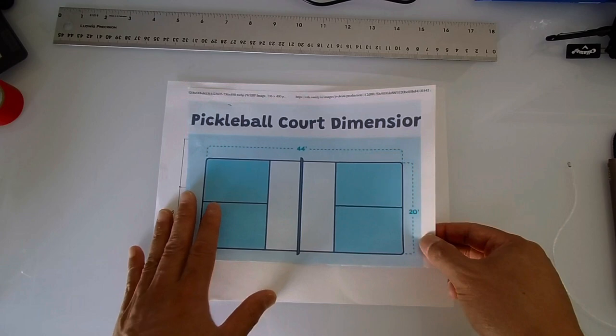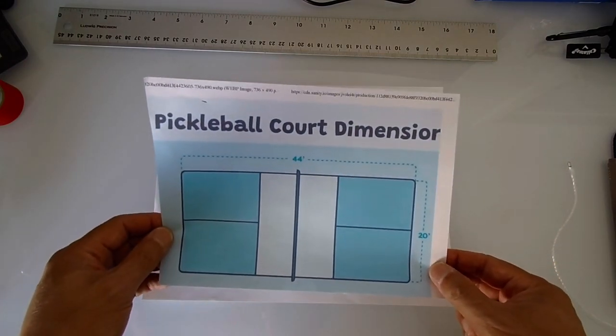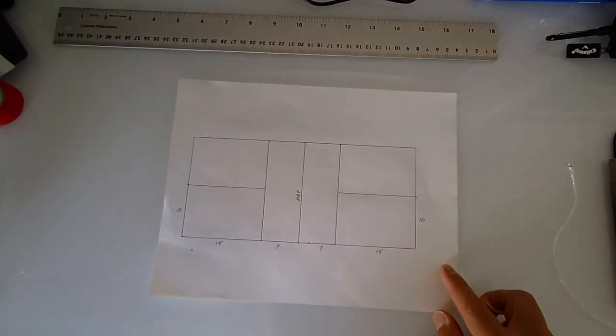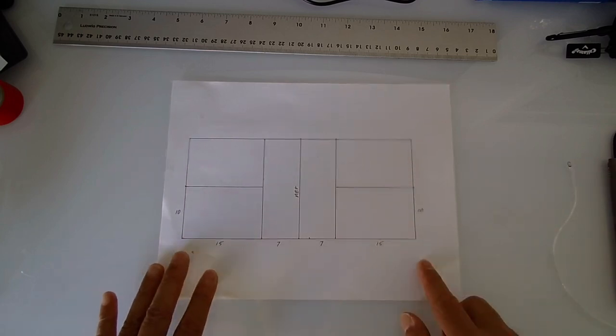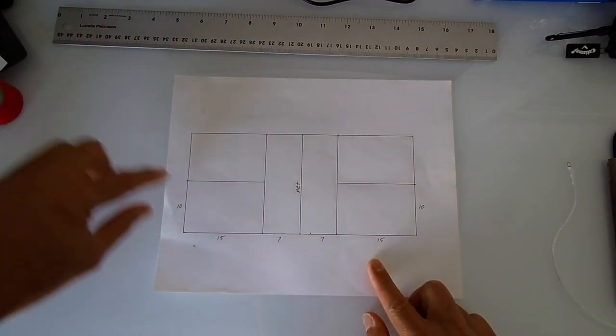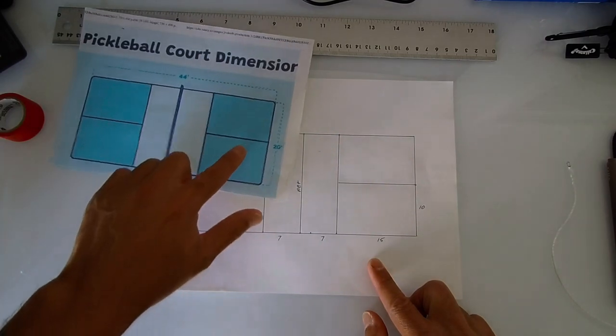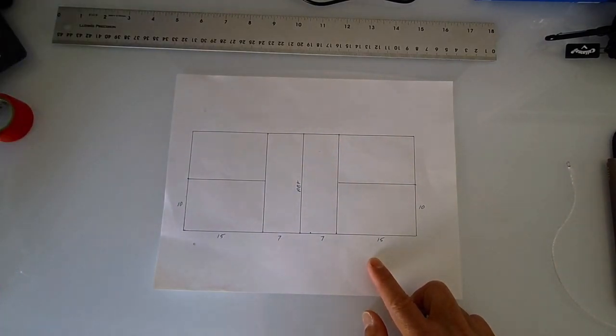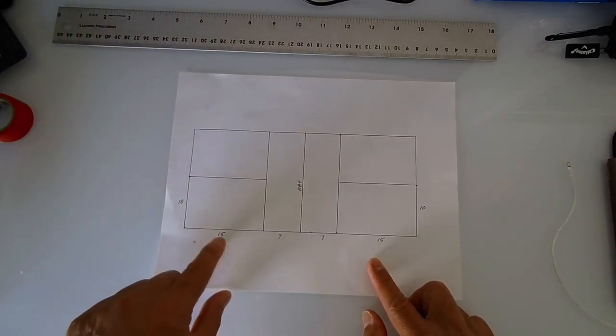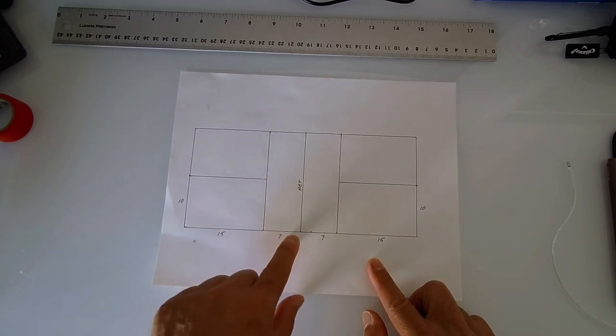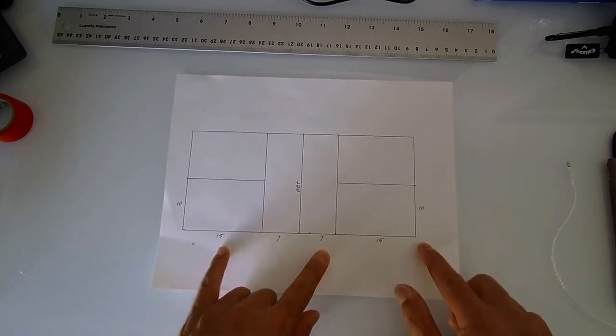And you know, if you want to make a smaller court I suppose you could do that too, but let's go from there. So from there what we're going to break it down to 10 because you can see it's 20. Break it down to 10, 15, 7 for the kitchen, 7 again, 15 and 10.